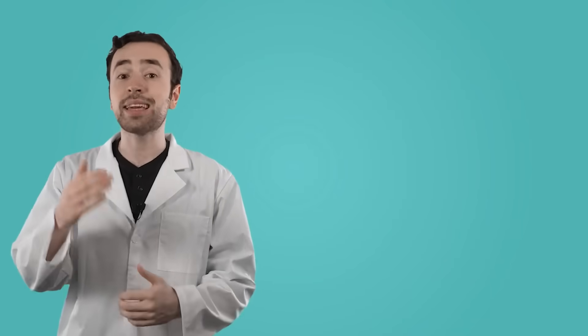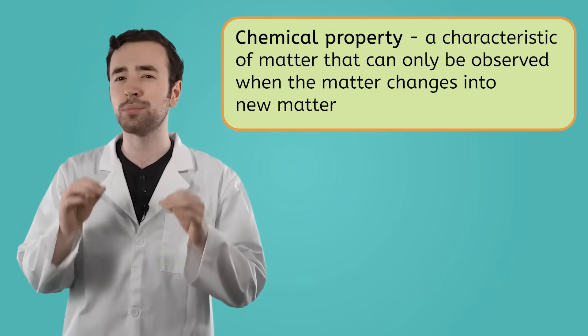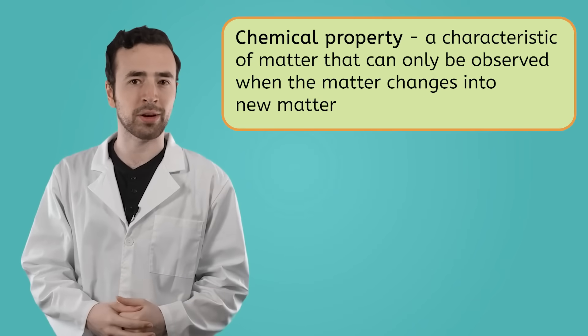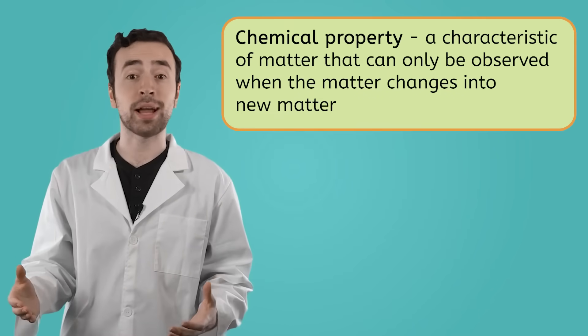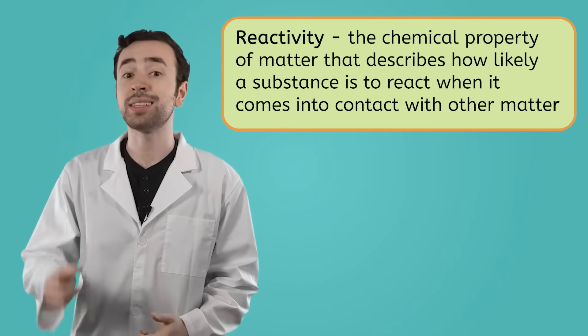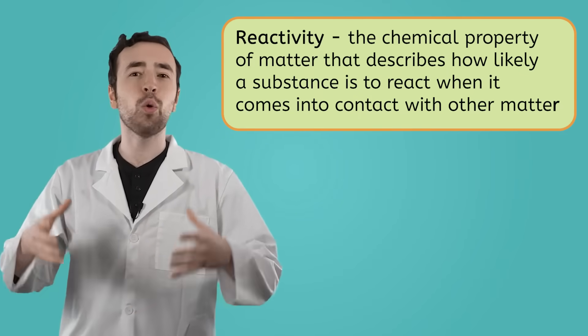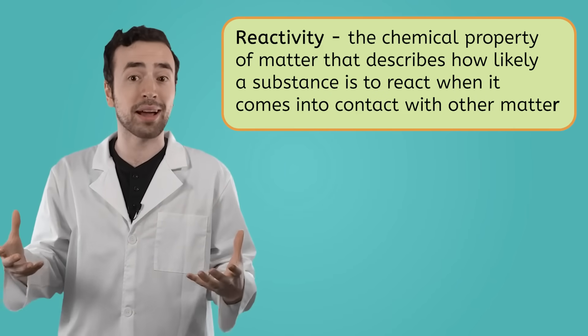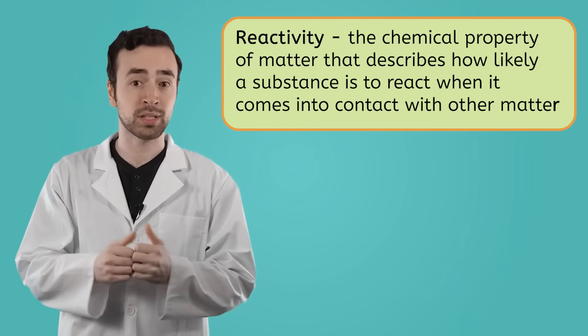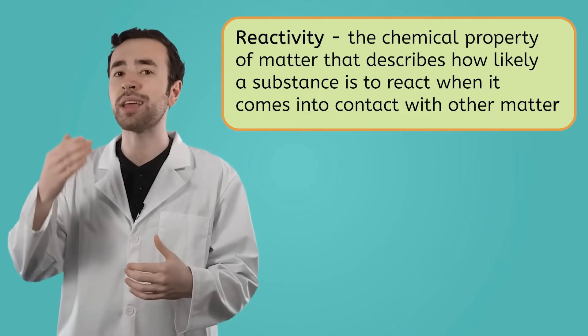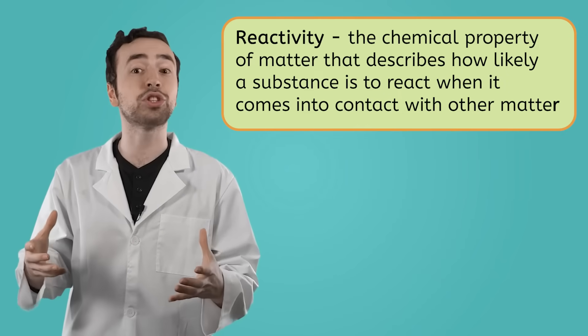Well then we've got some chemical properties to observe. A chemical property is a characteristic that we can only observe when the matter changes into a new kind of matter. One of the ways that matter can change is through a chemical reaction. Reactivity is the chemical property of matter that describes how likely it is for a substance to react when it comes into contact with another substance. When matter reacts, it changes into a new kind of matter and energy is released.